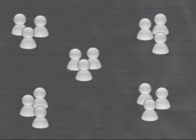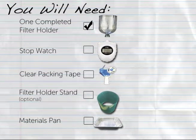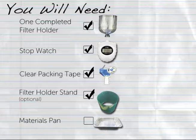Each group of three students will need the following materials: one completed filter holder, a clock with secondhand or stopwatch, and either clear packing tape or an optional filter holder stand, as prepared in the Designing Water Filters how-to, constructing the filter holder.